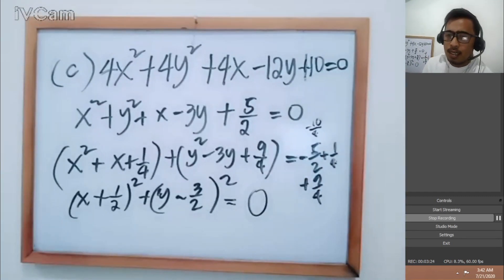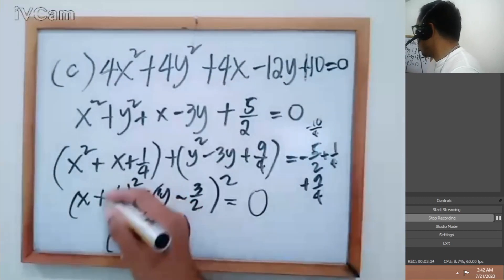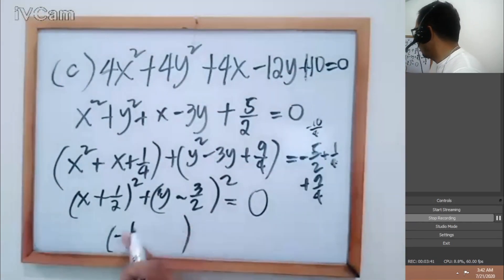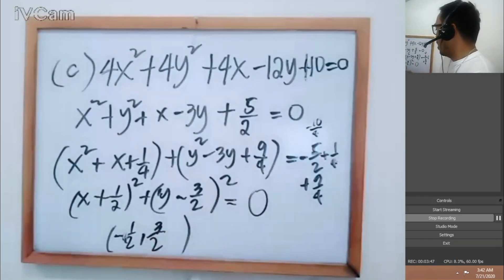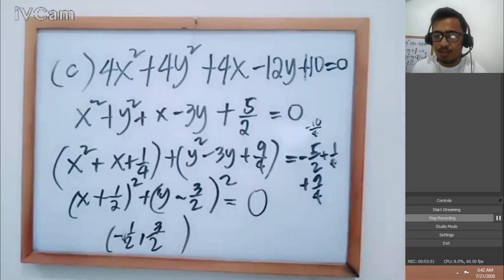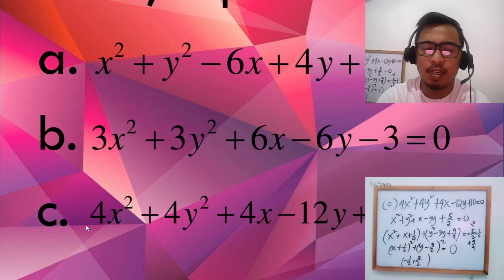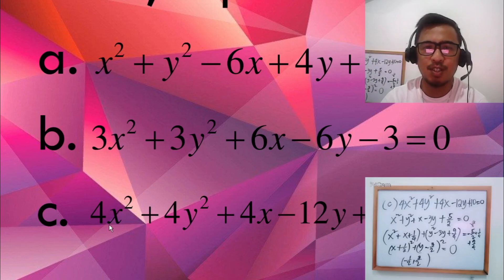Since Q = 0, the graph is a single point. Rewriting, (X + 1/2)² = (X − (−1/2))², so H = −1/2, and K = 3/2. The graph is the single point (−1/2, 3/2). To summarize: A is empty set, B is a circle, and C is a point. Watch for the next video as we discuss more exercises and challenging problems about circles.